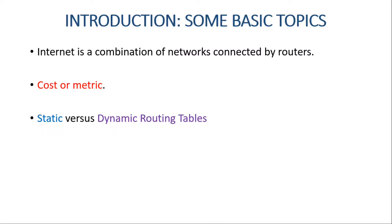Then we have static versus dynamic routing tables. A routing table can either be static or dynamic. A static table is one with manual entries, and a dynamic table is one that is updated automatically whenever there is a change in the internet. Routing protocols have been created in response to the demand for dynamic routing tables. A routing protocol is a combination of rules and procedures that lets routers in the internet inform each other of changes.